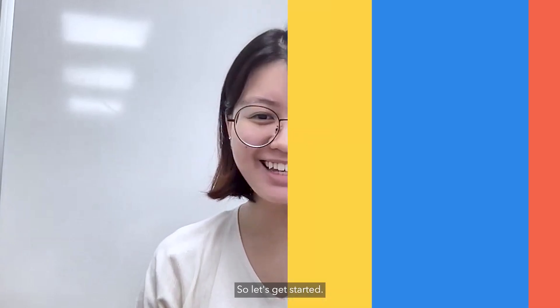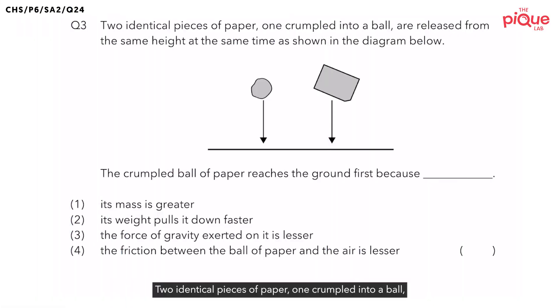So, let's get started! Two identical pieces of paper, one crumpled into a ball, are released from the same height at the same time as shown in the diagram below. The crumpled ball of paper reaches the ground first and the question wants us to find out the reason why the crumpled ball of paper reaches the ground first.